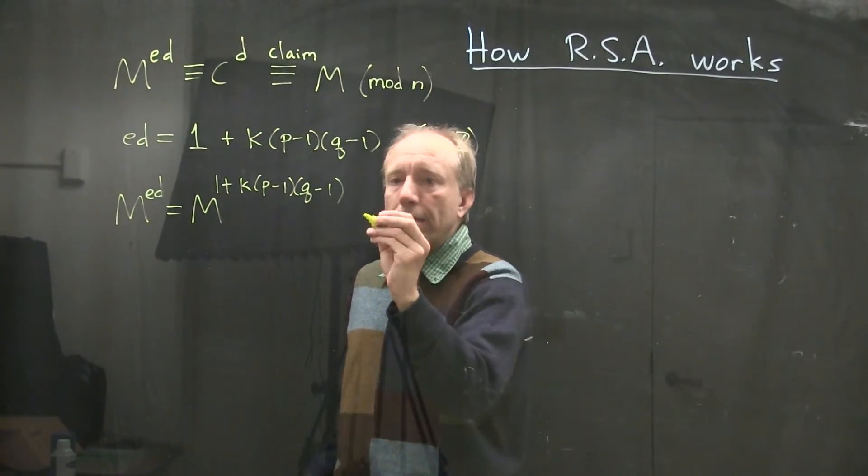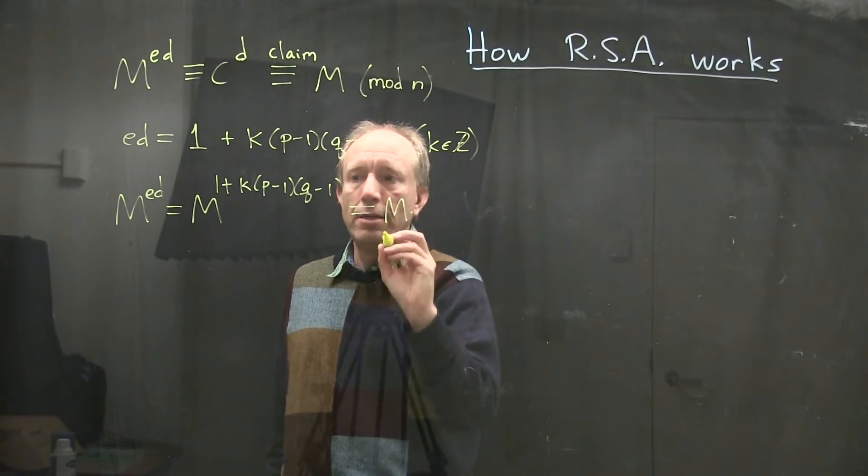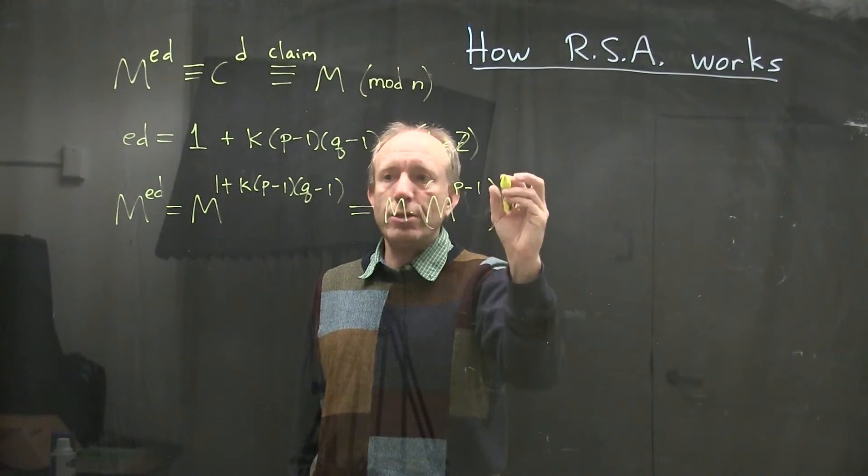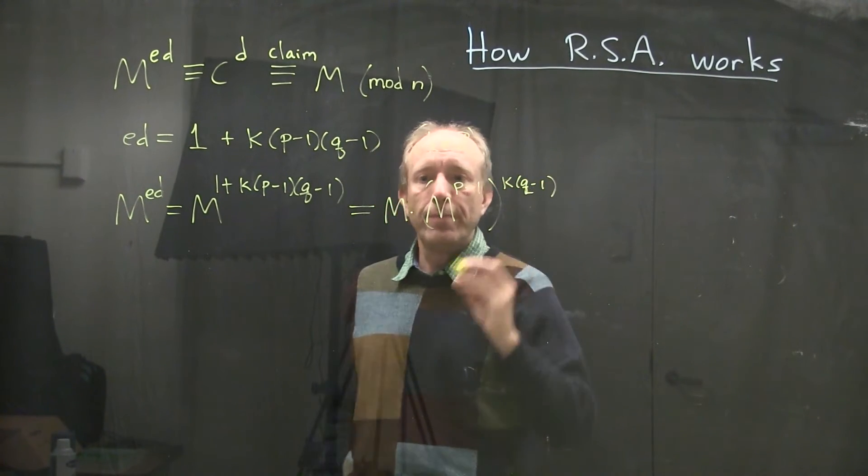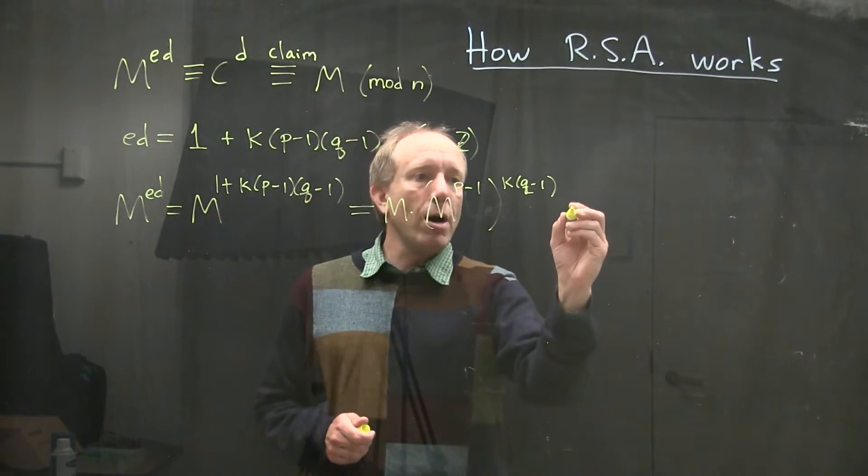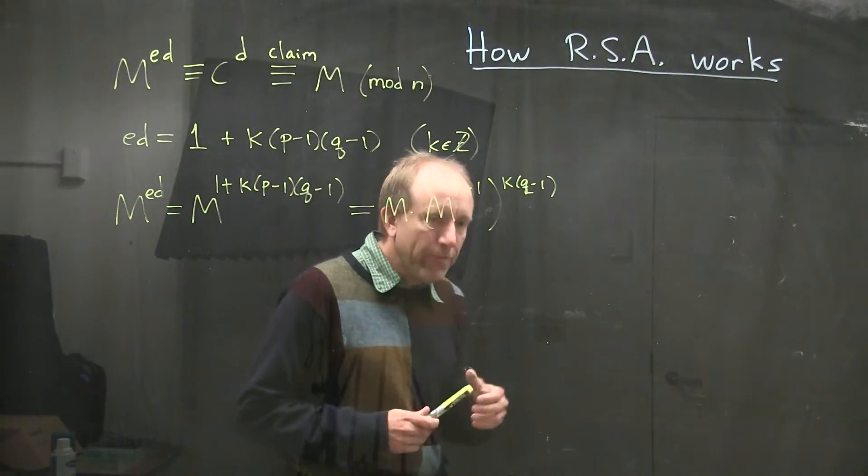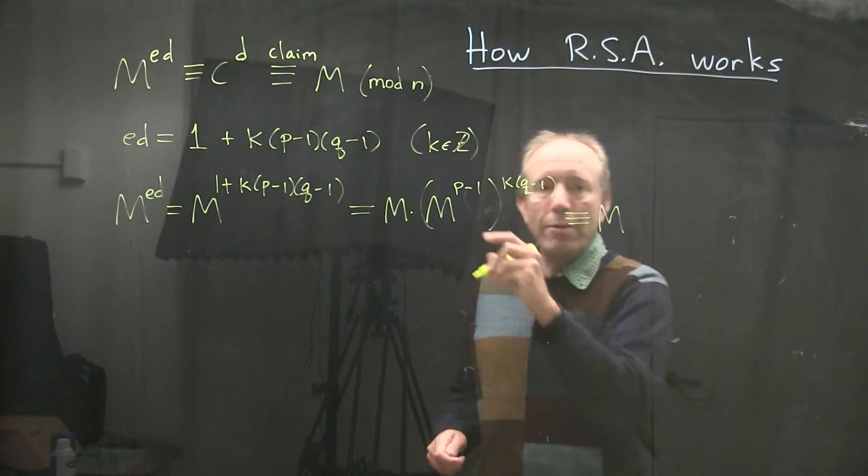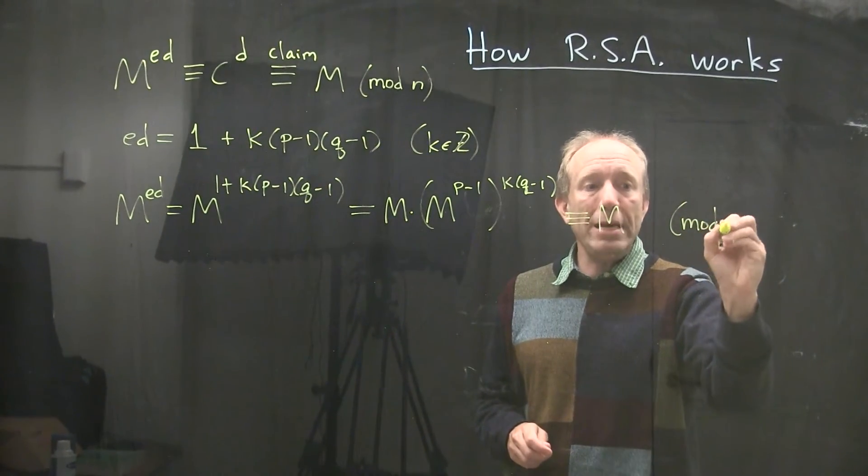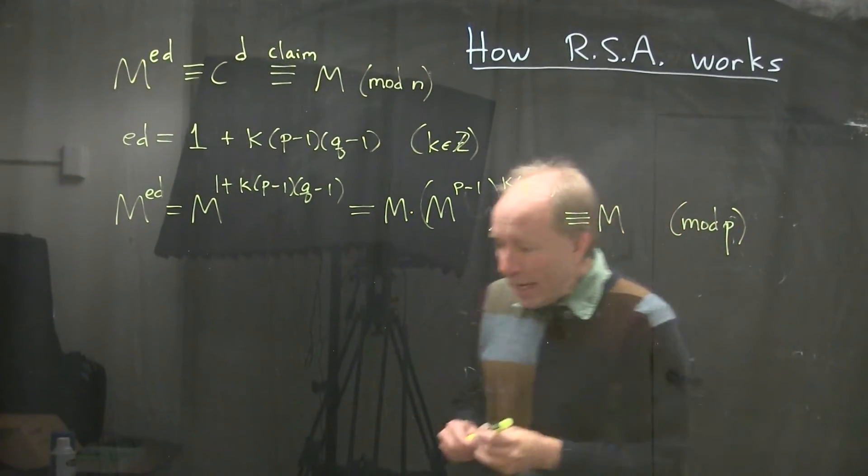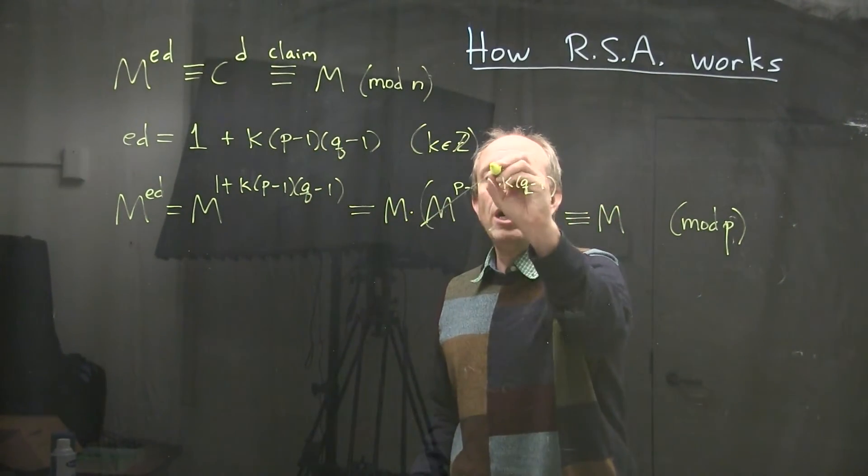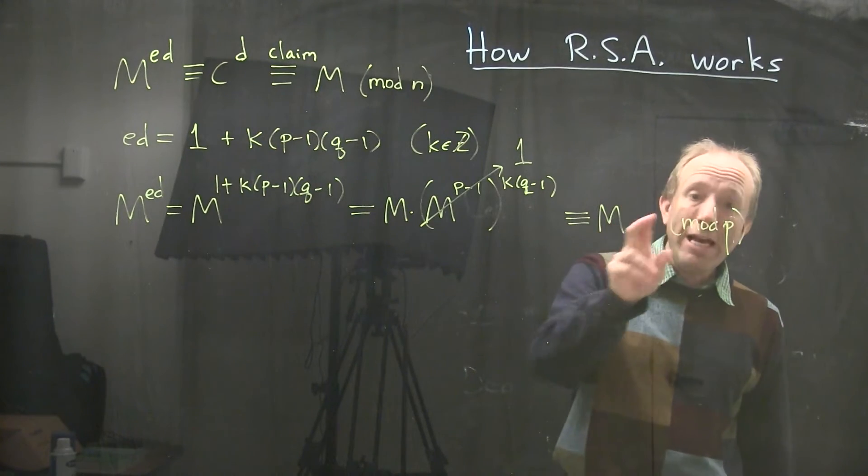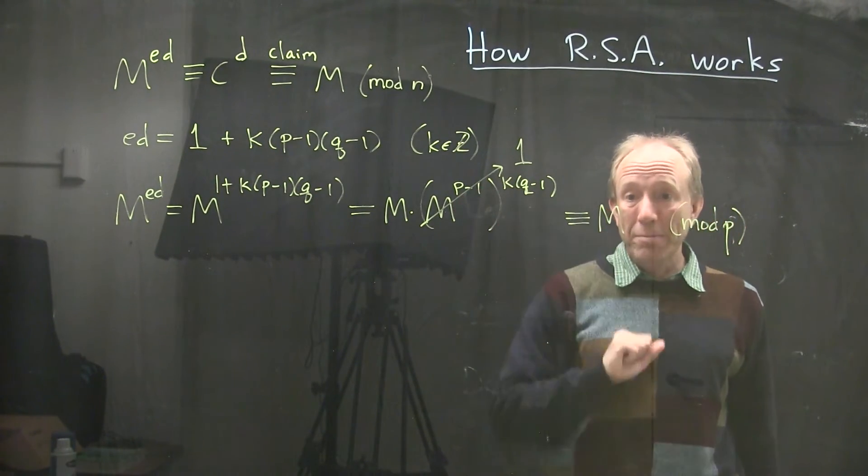So I can rewrite this as M times M to the P minus 1 raised to the K times Q minus 1. And if I look at that in mod P, remember that we have Fermat's Little Theorem. And Fermat's Little Theorem tells me that when I raise a number to the P minus 1 power in mod P, that will become a 1. So I can ignore it and I actually conclude that M to the ED is congruent to M in mod P. This is by Fermat's Little Theorem.